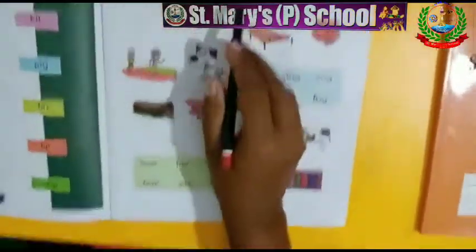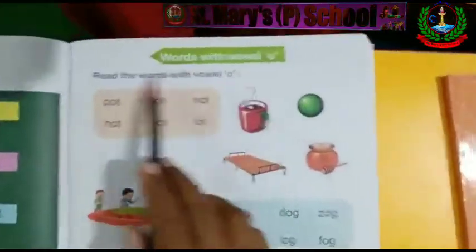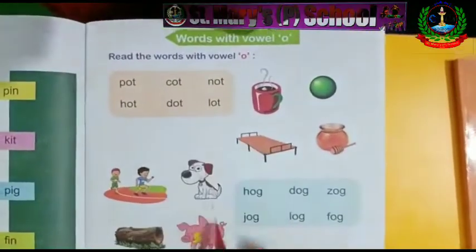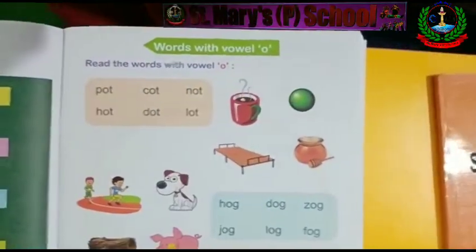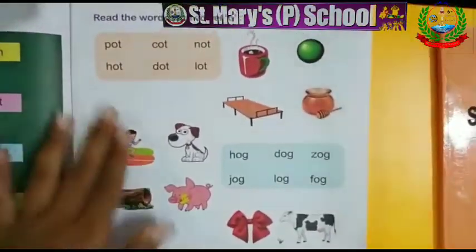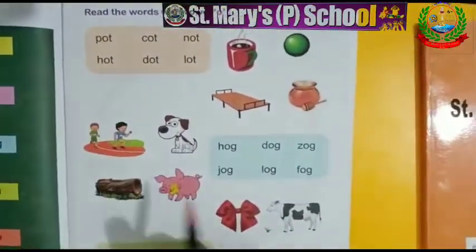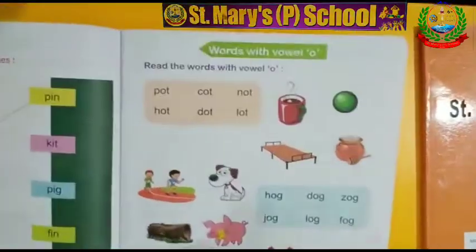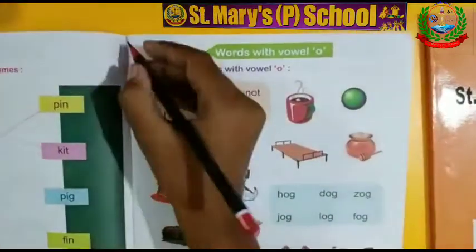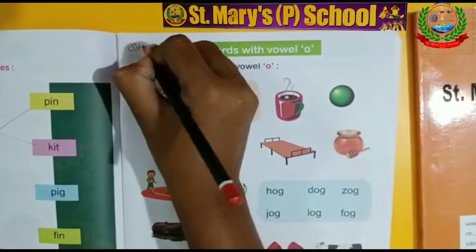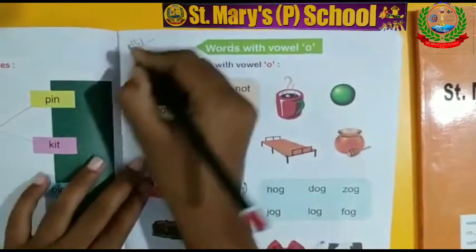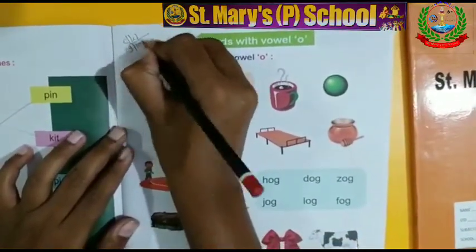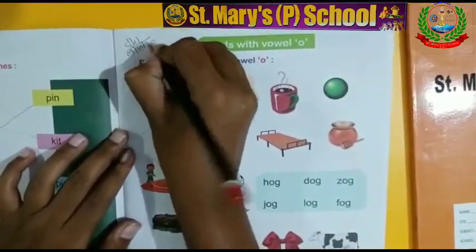Okay students, यह थे आपके words with vowel O. आपको इसी तरीके से read करना है सारे words को और साथ-साथ आप इन्हें learn भी करेंगे. यह आपका classwork था, तो आप यहाँ classwork और आज का date mention करेंगे: 9th of October 2020.